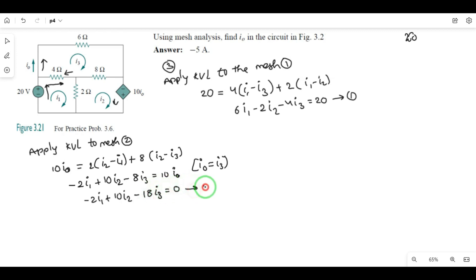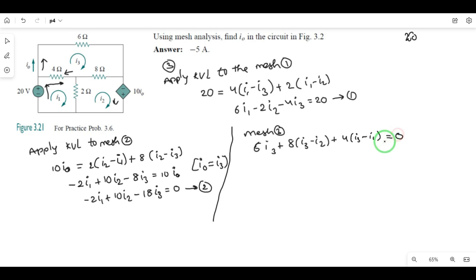Now write equation three from mesh three. Apply KVL to mesh three. We have plus 8 ohms times i3 minus i2, plus 4 ohms times i3 minus i1. That equals zero. So minus 4i1 minus 8i2 plus 18i3 equals zero. This is equation number three.